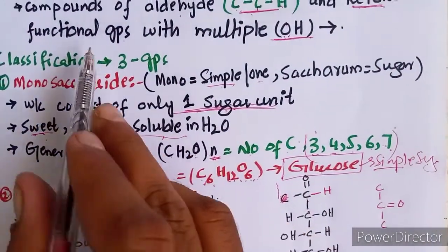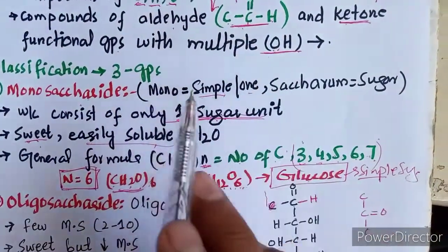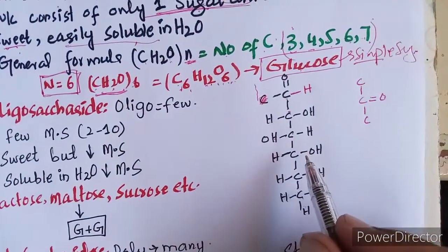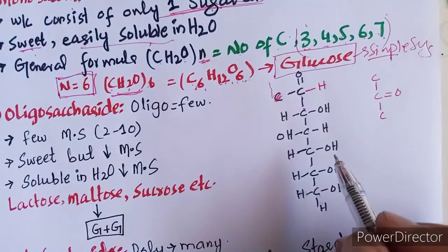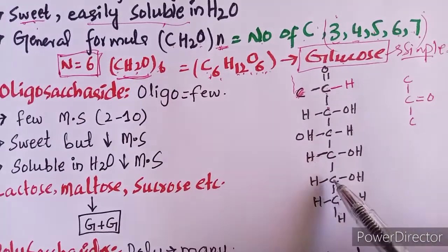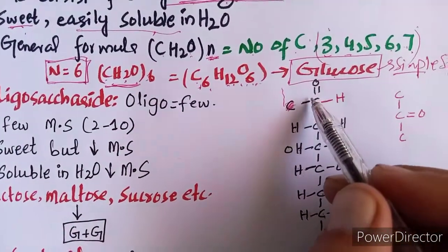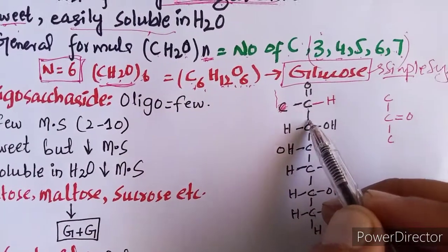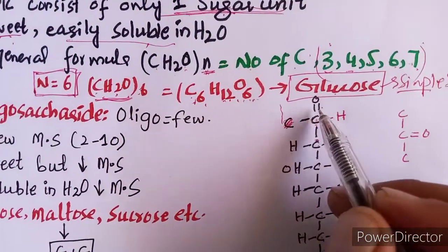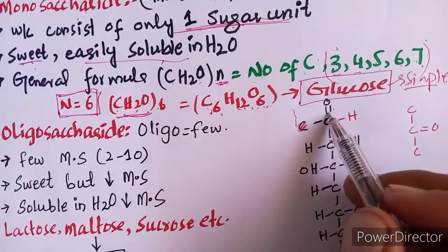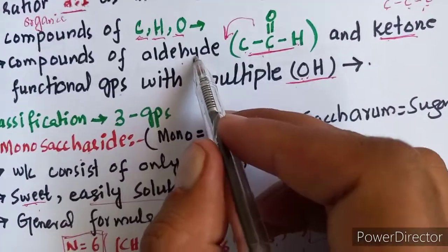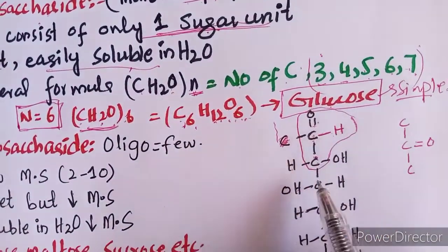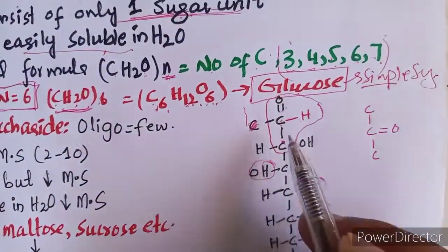Looking at the structure of glucose, it has 6 carbons (C6). In the definition, glucose has a carbon-hydrogen double bond with oxygen — this is an aldehyde functional group. Those compounds which have an aldehyde functional group and many OH groups are carbohydrates. Glucose is an example with an aldehyde functional group.